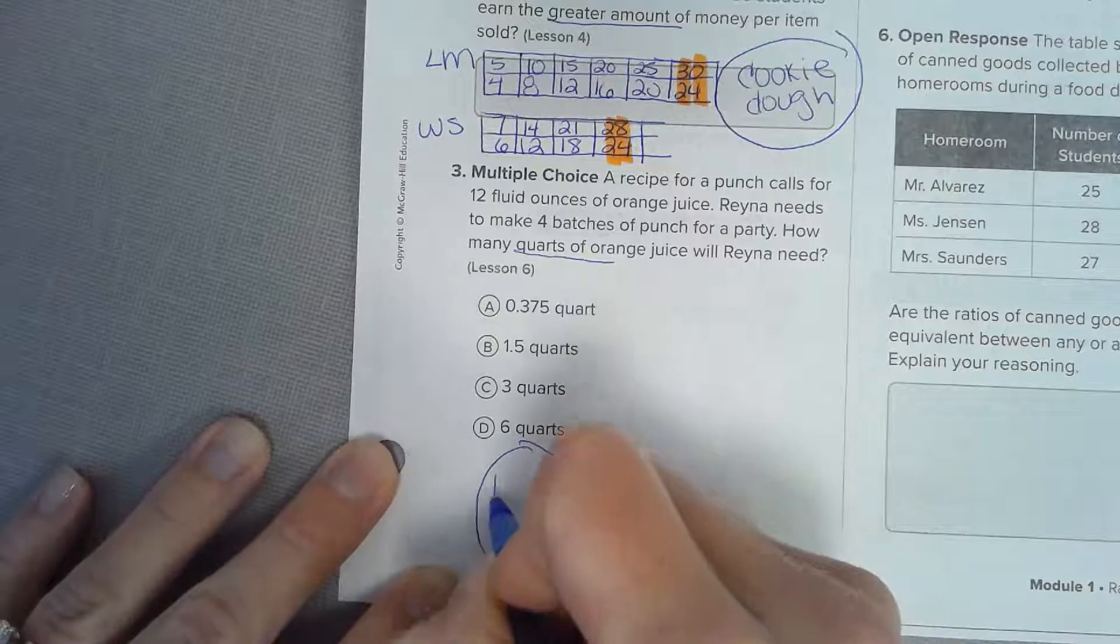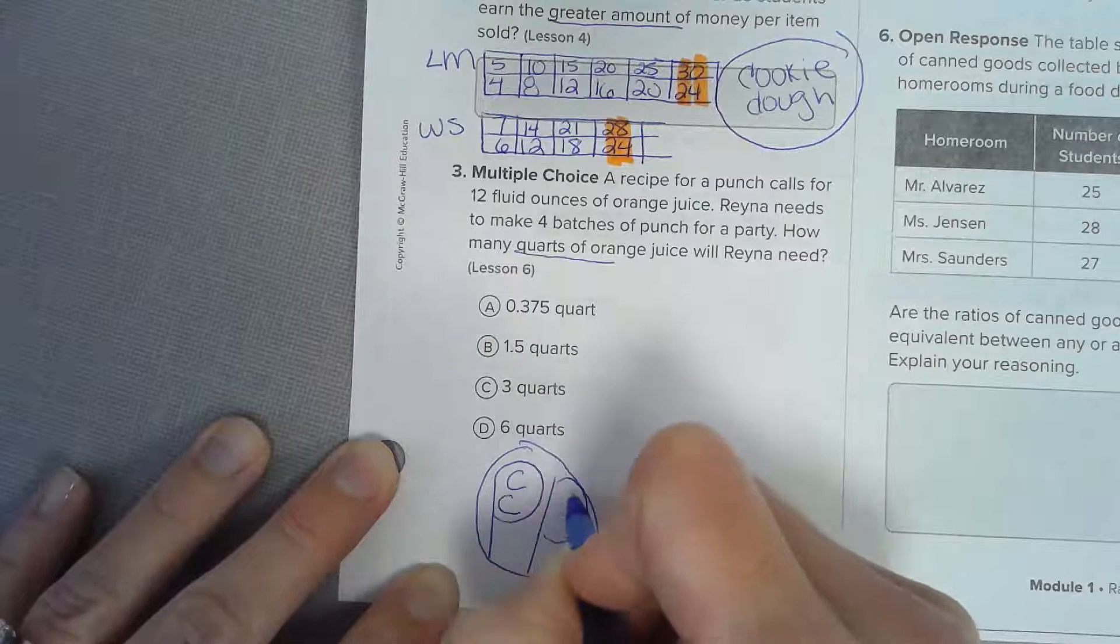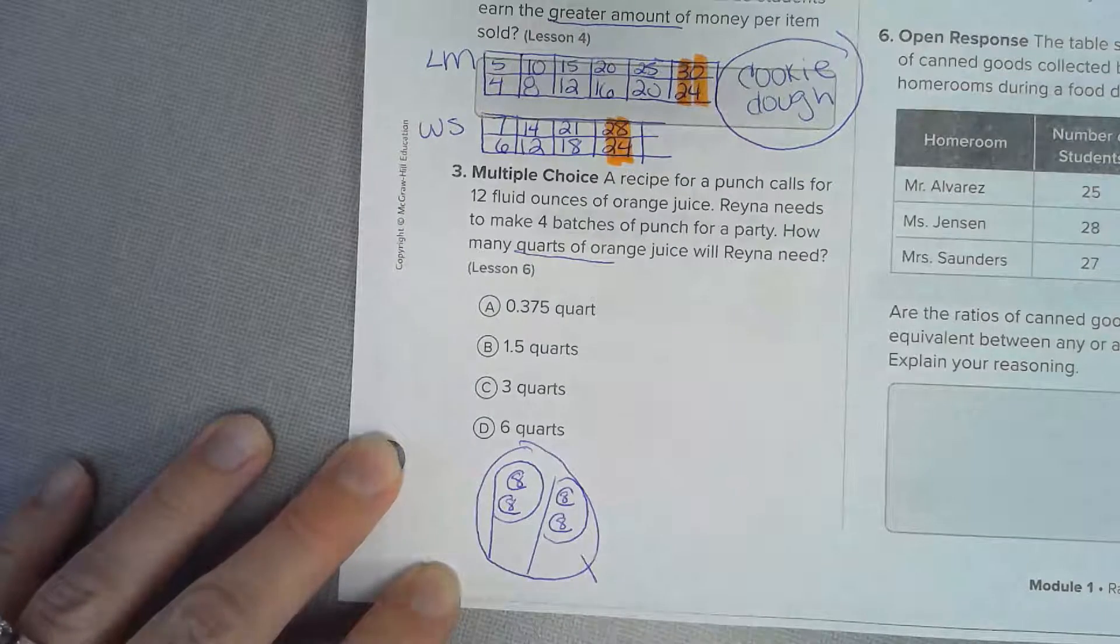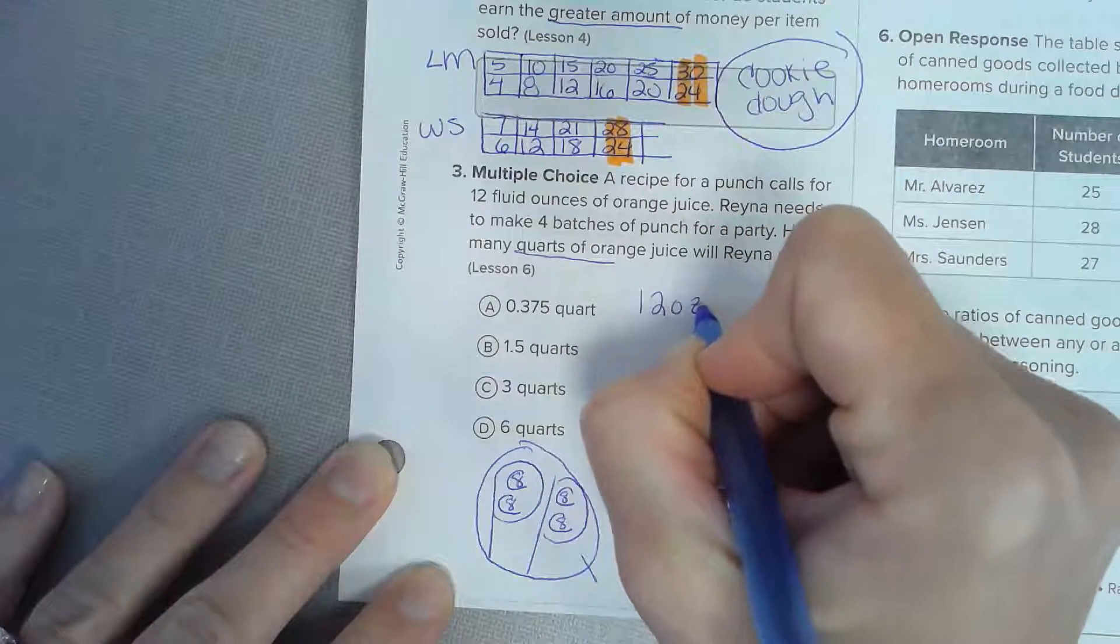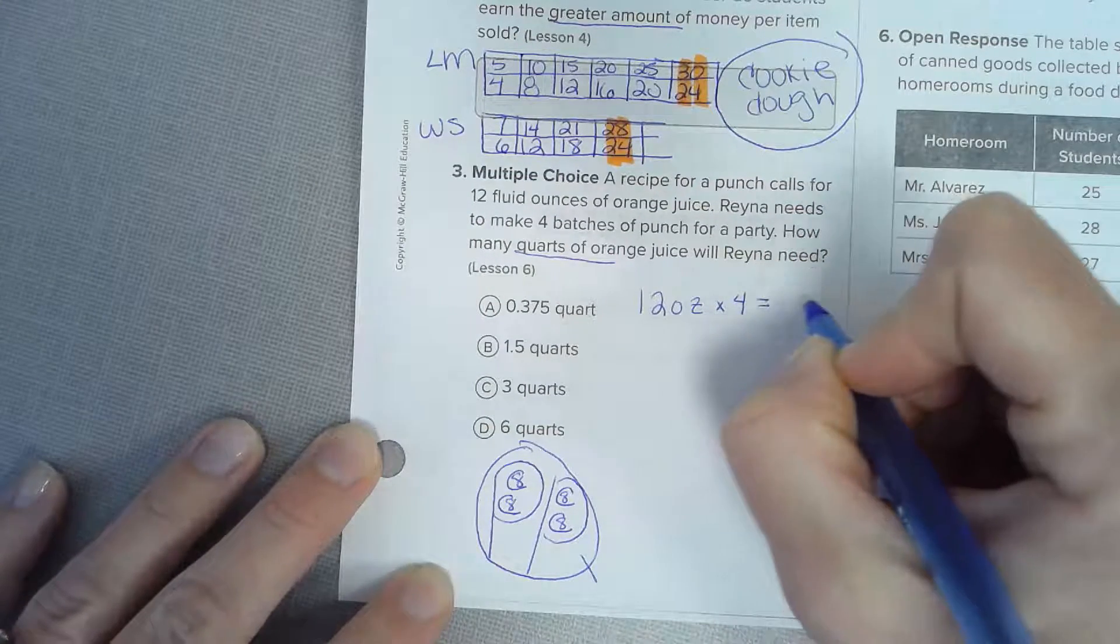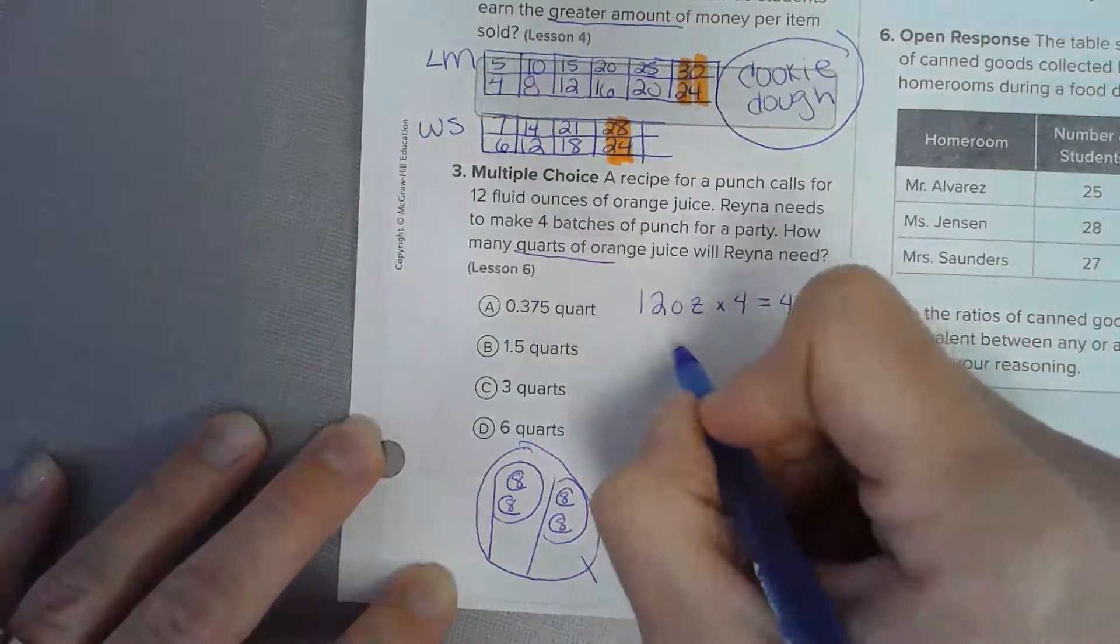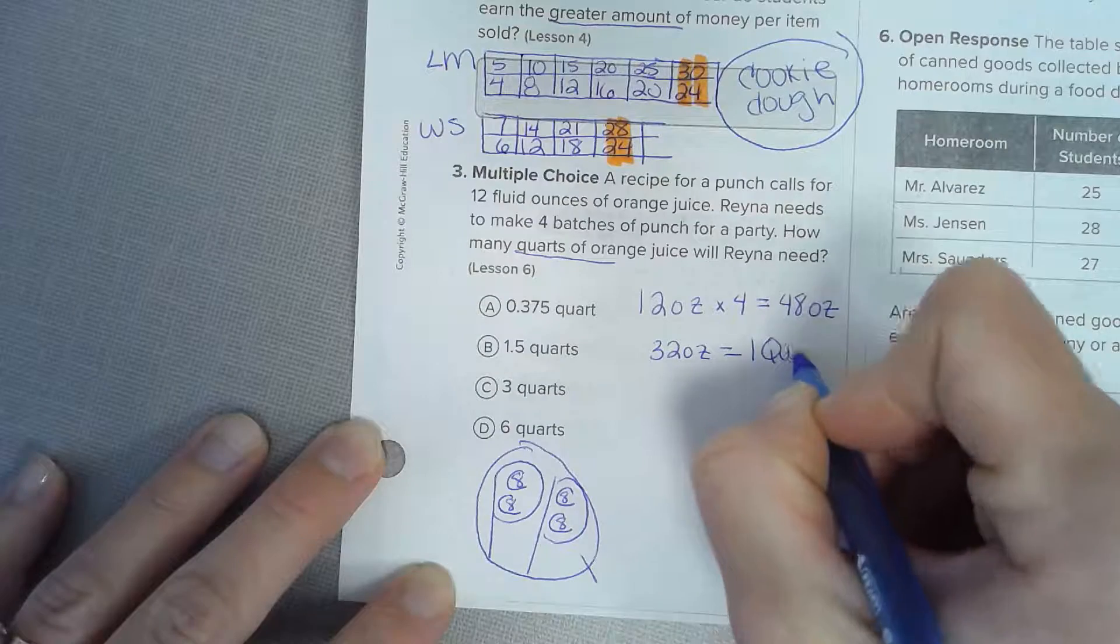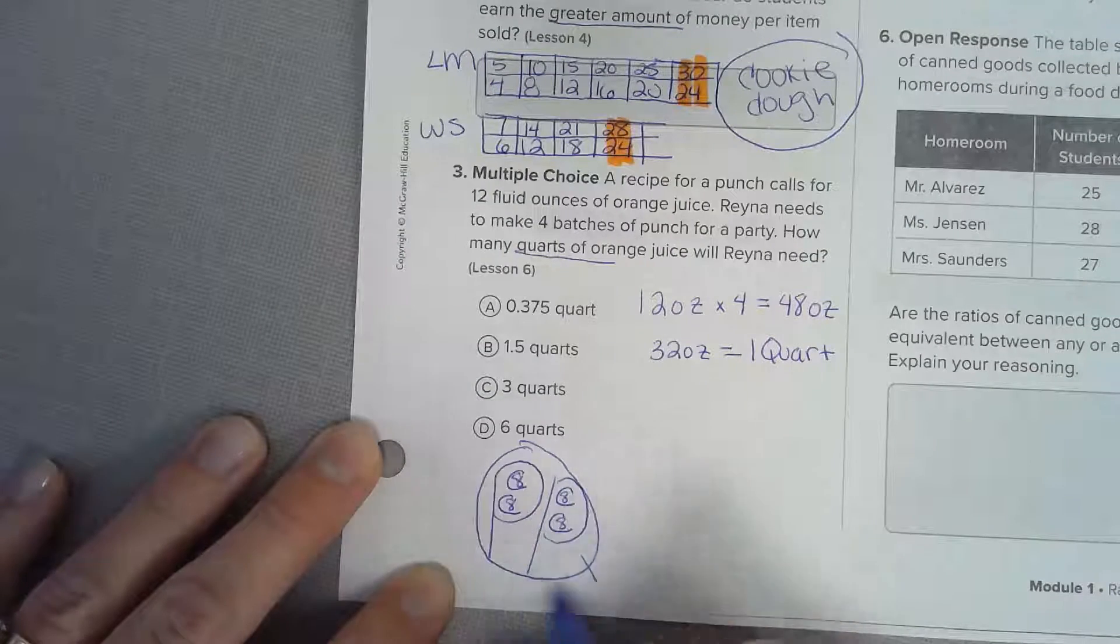In one quart we have two pints, each pint has two cups, and each cup has eight ounces. I know there are twelve ounces of orange juice and we're gonna times it by four for four batches. So she's gonna have a total of forty eight ounces of orange juice. I know that there are thirty two ounces in one quart - eight, sixteen, twenty four, thirty two ounces in one quart.